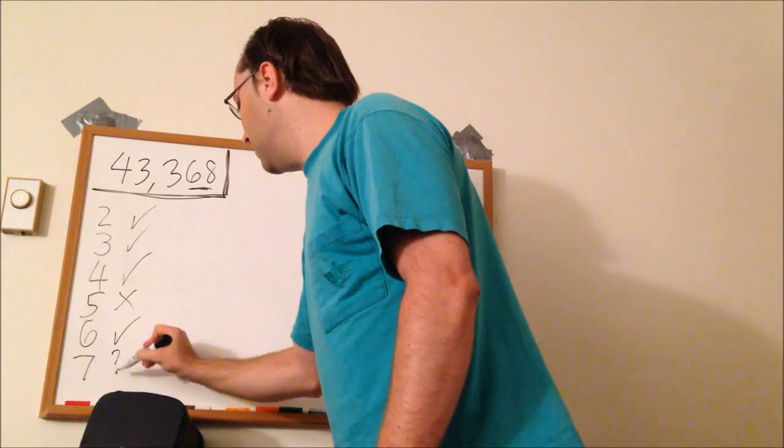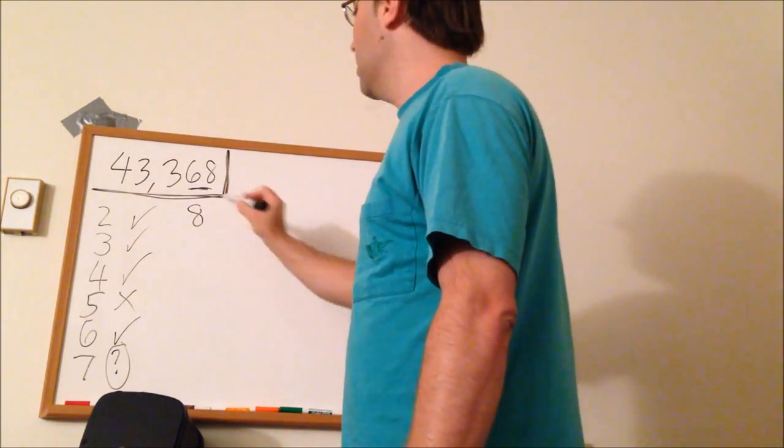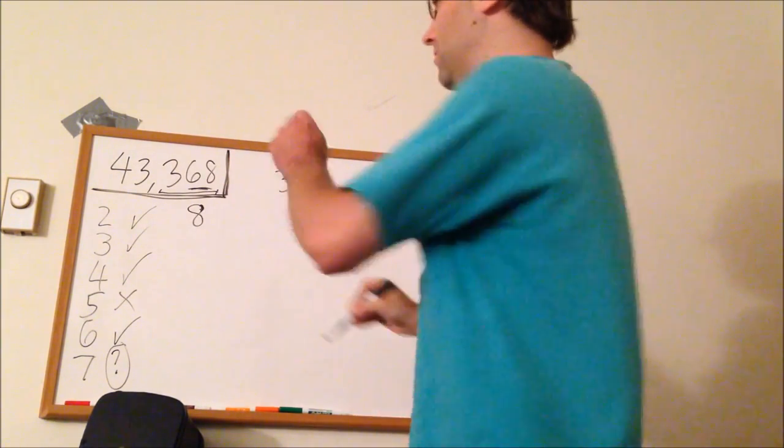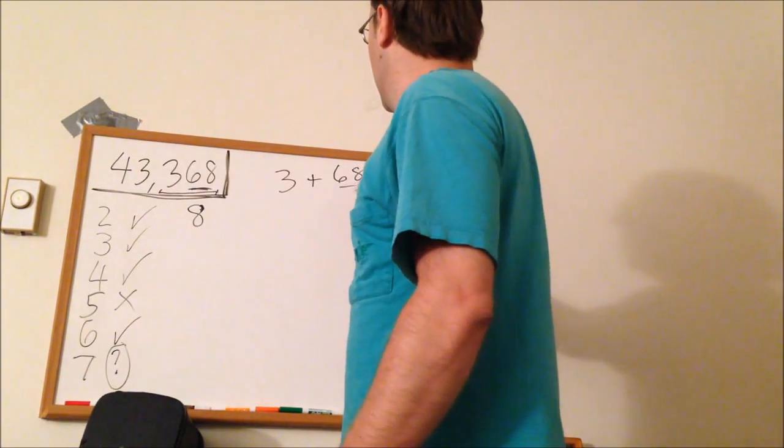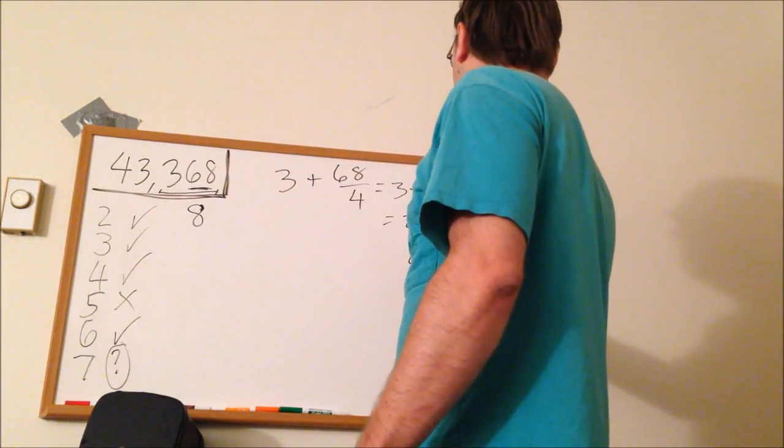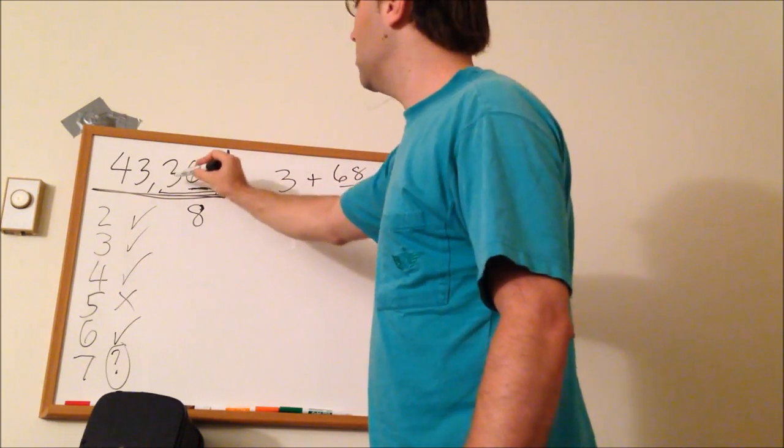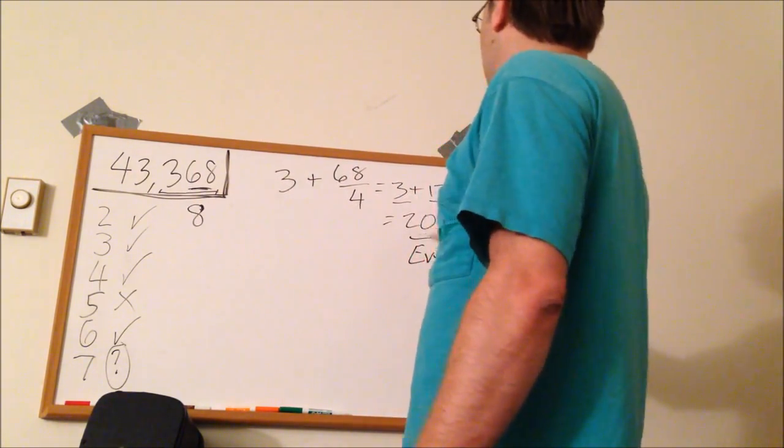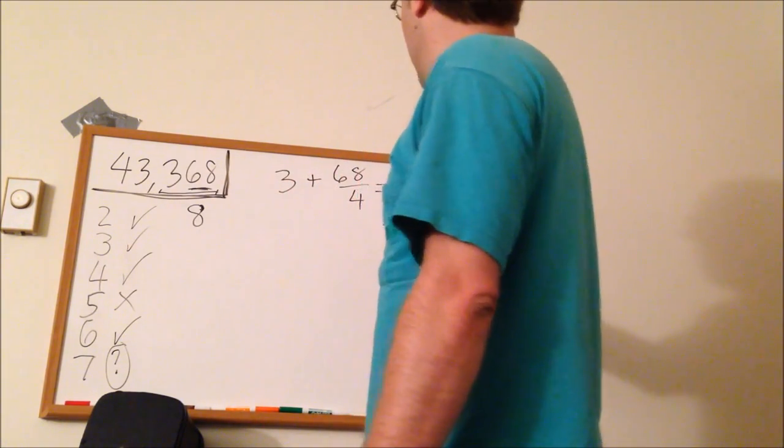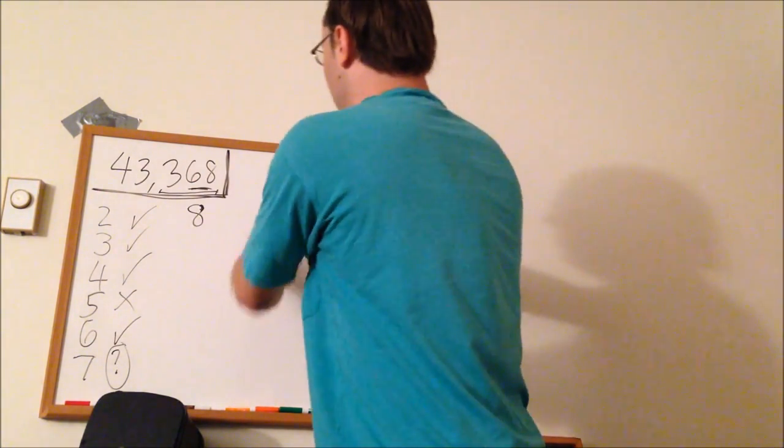Now 7, we're going to leave that one for later because that has a little bit more complex rule. 8 is actually not all that hard. You look at the last three digits. The little shortcut here is 3 plus, and you know the number has to be divisible by 4 to be divisible by 8. 68 over 4, this is the trick, comes out to an even number when you do this.